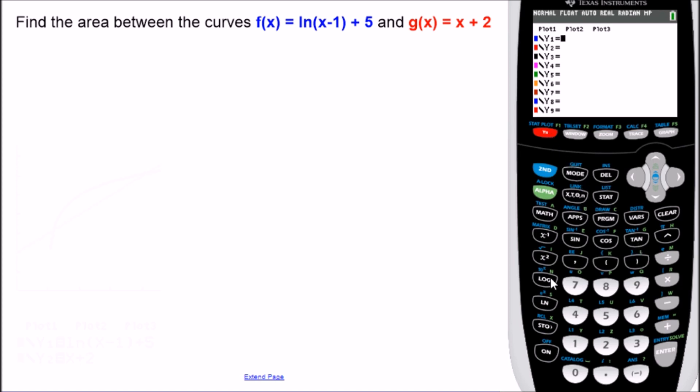So we'll just type this in. You've got natural log of x minus 1, and we close the parentheses, and we got plus 5 outside. And then the second function is g of x equals x plus 2. So we'll go ahead and graph these two. And the first one is a natural log curve, and the second one is a linear function, and they intersect in quadrant 1.